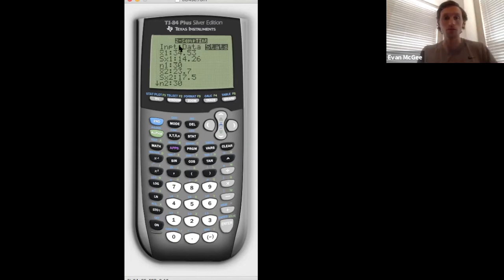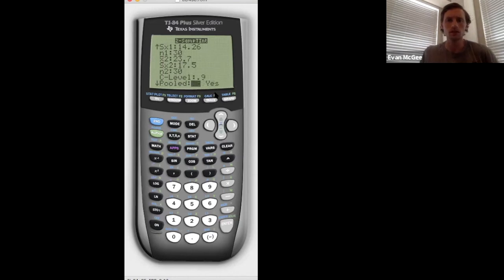If they gave you actual samples, you'd put them in list 1 and list 2, but they haven't done that here. I've typed in the mean from the south, 34.53, so my first sample is the south with standard deviation 14.26 and sample size 30. My second sample, the north, had a mean of 23.7 and standard deviation 17.5. Type this data in, change confidence level to 90%, and for pooled, select no (I'll talk more about this later).